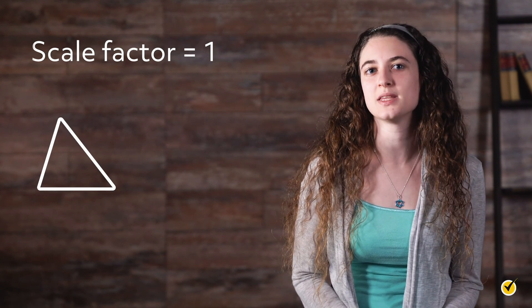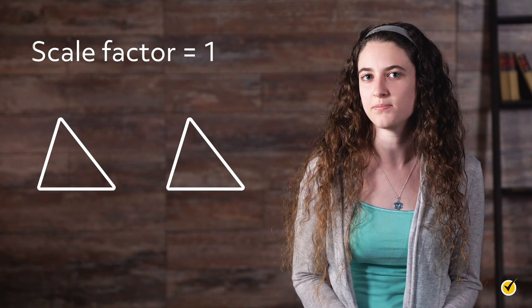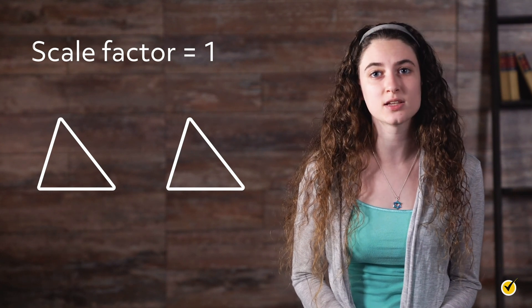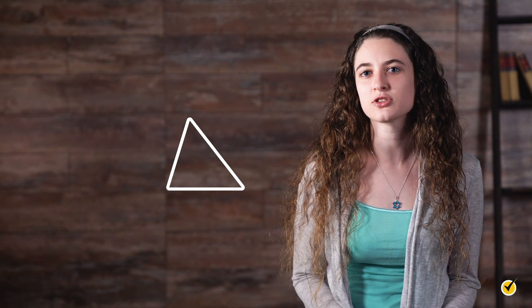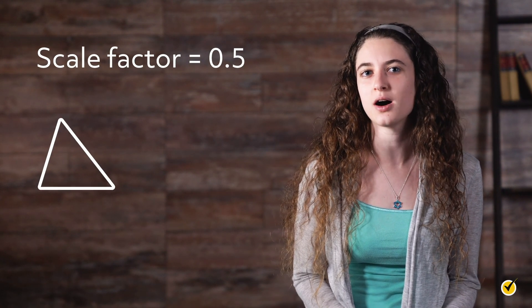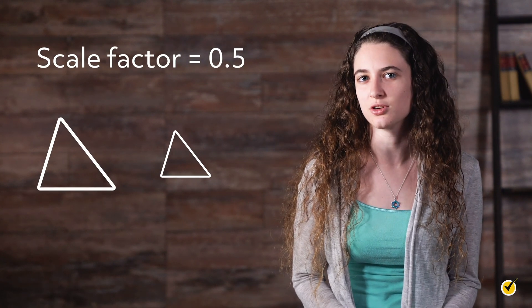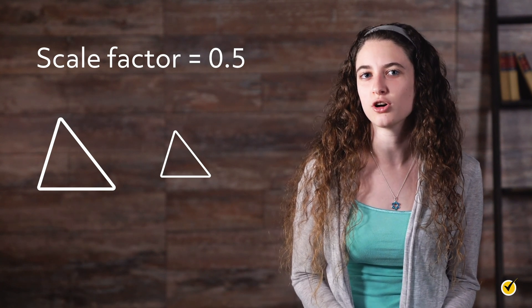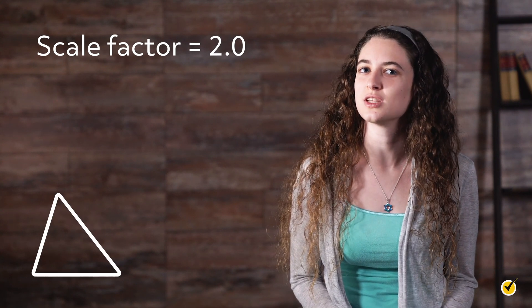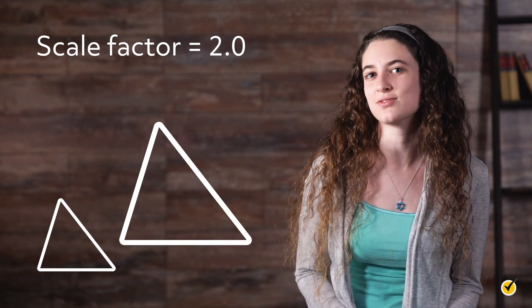The number that determines the size change of an object is the scale factor. When we see a scale factor of exactly 1, the new object will be the exact same size as the original. When the scale factor is less than 1, the new object will be smaller — for instance, a scale factor of 0.5 would result in the new object being half the size of the original. A scale factor greater than 1 results in the new object being larger, so a scale factor of 2.0 would make it twice the size.